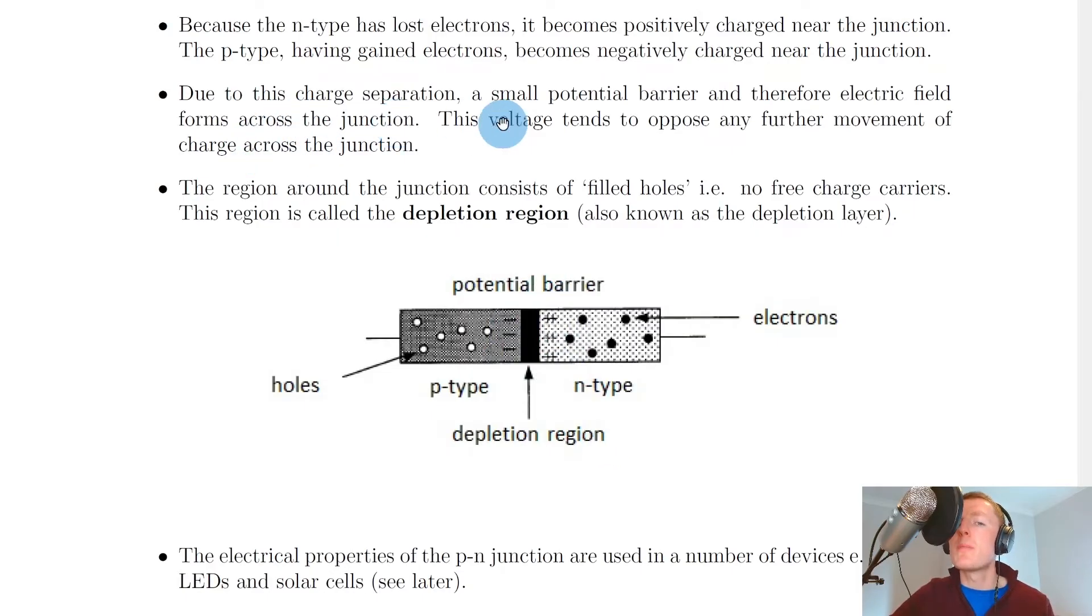Due to this charge separation, a small potential barrier and therefore electric field forms across the junction. An electric field will be set up whenever you've got two oppositely charged parallel plates or regions. This potential difference or voltage tends to oppose any further movement of charge across the junction.